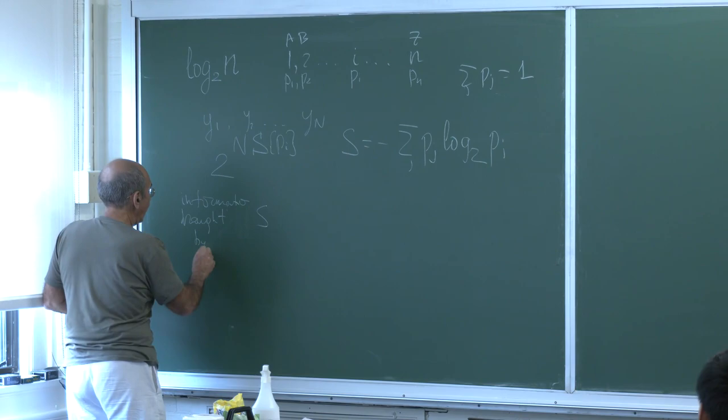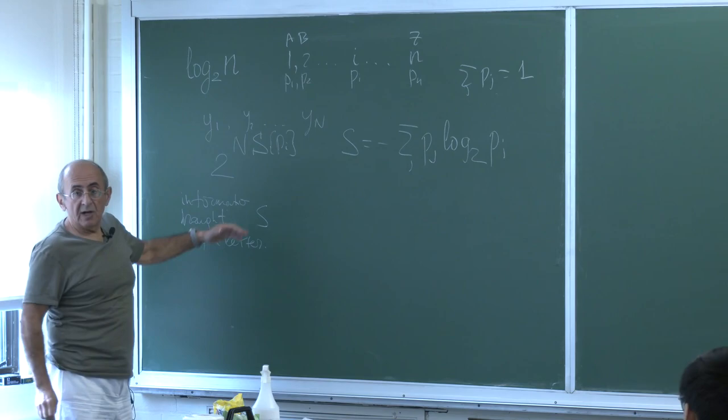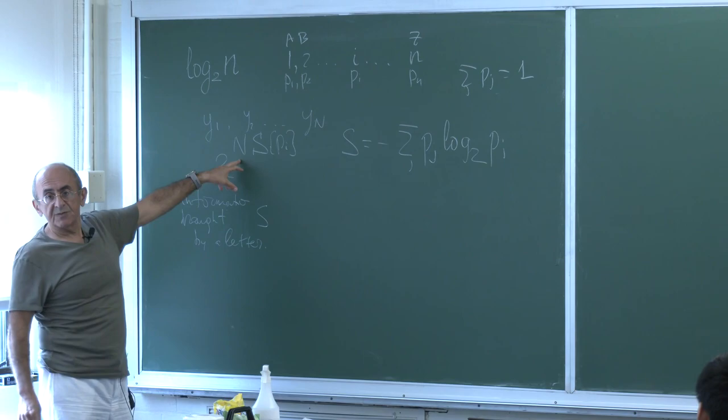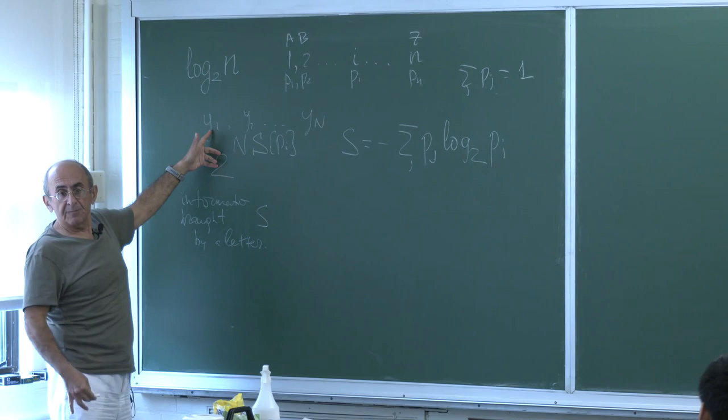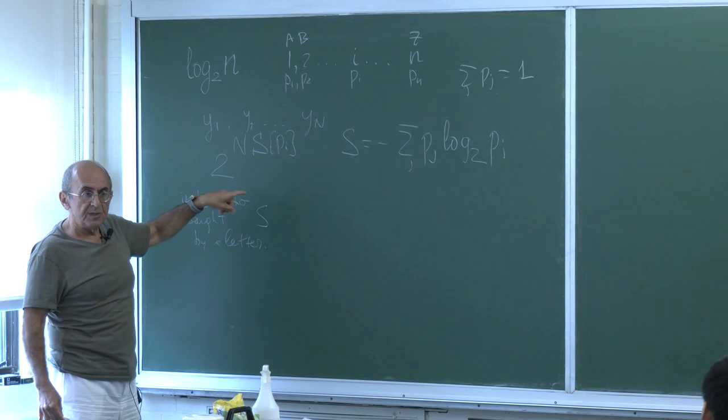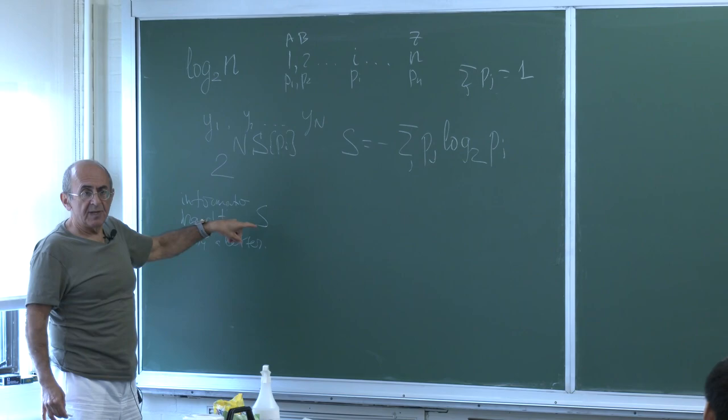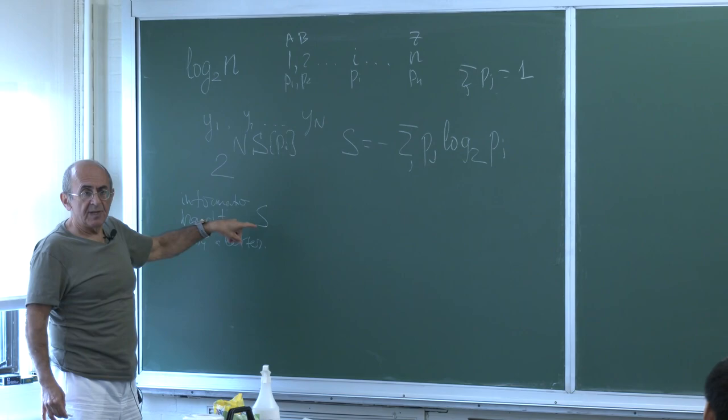The total number of typical strings has a logarithm equal to N·S, which is the information brought by an entire string of N letters. Dividing by N gives the information per letter. That's the Gibbs entropy — the amount of information that on average every single message brings. Gibbs entropy is the mean amount of information brought per letter, as long as we know only probabilities and no unusual correlations.